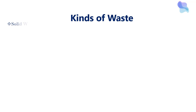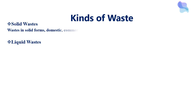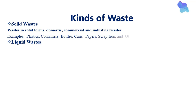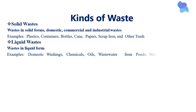There are two kinds of waste: first, solid waste, and second, liquid waste. Solid waste examples include plastics, containers, bottles, cans, papers, cardboard, and other trash. Liquid waste examples include domestic washings, chemicals, oils, wastewater from ponds, manufacturing industries, and other sources.